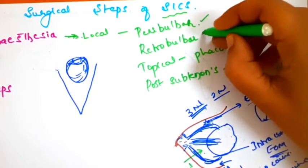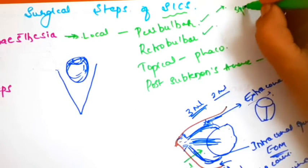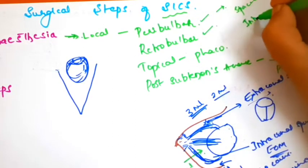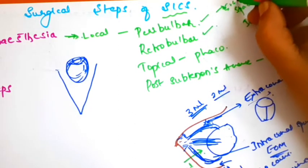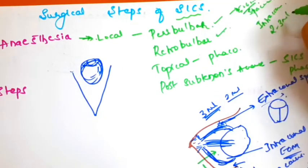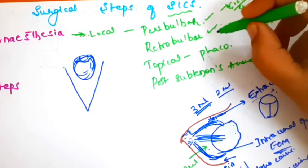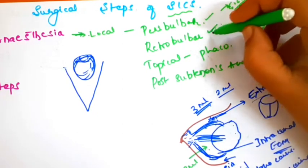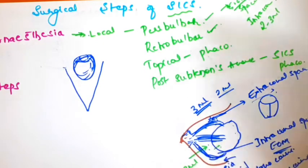The difference between peribulbar and retrobulbar anesthesia: in peribulbar, the space is extraconal, whereas in retrobulbar the space is intraconal. Peribulbar requires at least 5 to 6ml, whereas retrobulbar uses only 2 to 3ml. Anesthesia with retrobulbar is achieved more quickly compared to peribulbar. However, complications like injury to the optic nerve and globe perforation are more common with retrobulbar compared to peribulbar block.